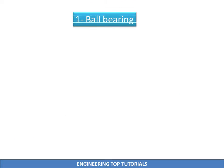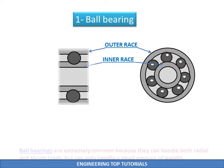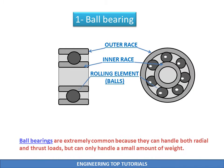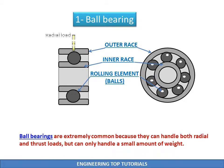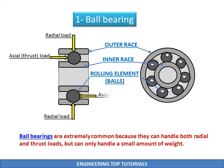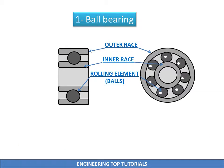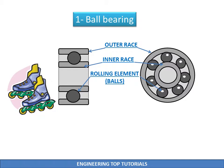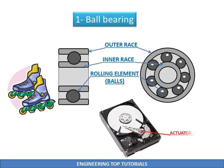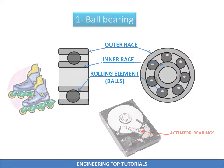Ball bearings are extremely common because they can handle both radial and thrust loads, but can only handle a small amount of weight. They are found in a wide array of applications such as roller blades and even hard drives, but are prone to deforming if they are overloaded.